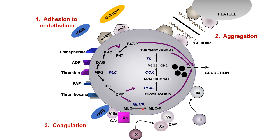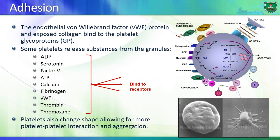The process of blood coagulation also takes place on the surface of platelets. Whenever you have a vascular injury, a protein known as von Willebrand factor is exposed. This leads to platelet binding to von Willebrand factor and activation of the platelets. That causes a series of signaling reactions leading to secretion of ADP, serotonin, factor V, calcium ions, ATP, fibrinogen, more von Willebrand factor, thrombin, and thromboxanes.